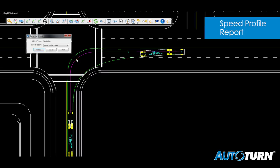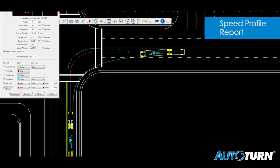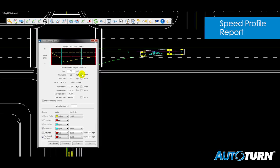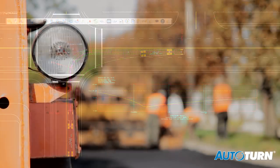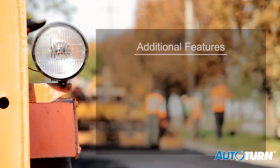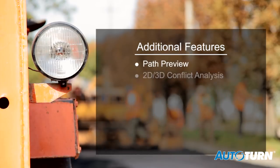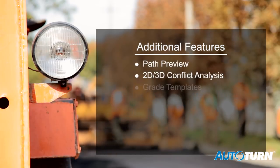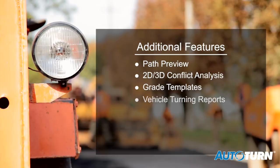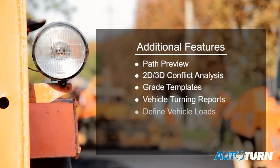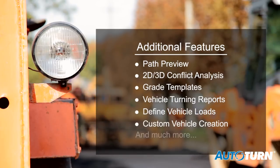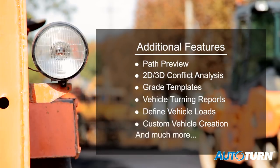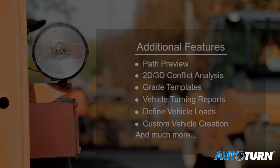A speed profile report lets engineers observe the speed changes of a design vehicle along a generated path. And these are just a few of the unique tools you'll find in AutoTurn, which has quickly evolved from a basic checking tool into a comprehensive analysis and design solution for roads and highways.